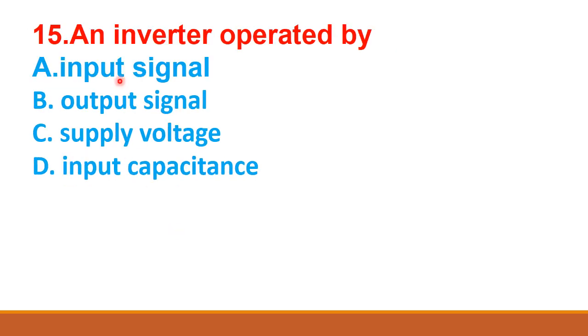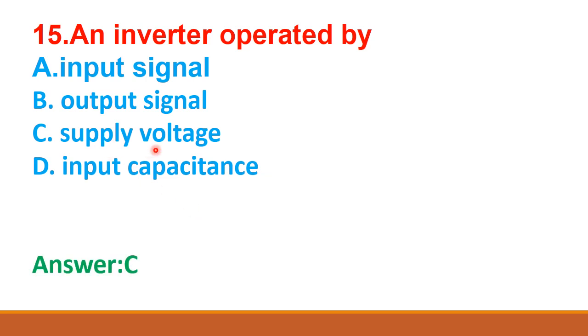An inverter is operated by — input signal, output signal, supply voltage, input capacitance. The correct answer is: supply voltage.